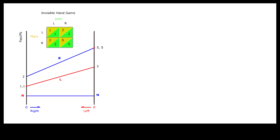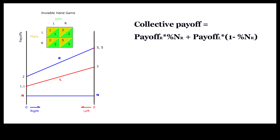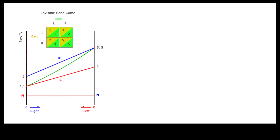The endpoints of the payoff curves correspond to the two-by-two payoff matrix. A quick glance at this graph shows that R dominates L, because the payoff for R is entirely above the payoff for L. Since each person choosing the same option has identical payoff, the collective payoff at each point along the horizontal axis is the weighted average of the payoff for each option at that point. The weights are the percentages of people choosing each of the two options.